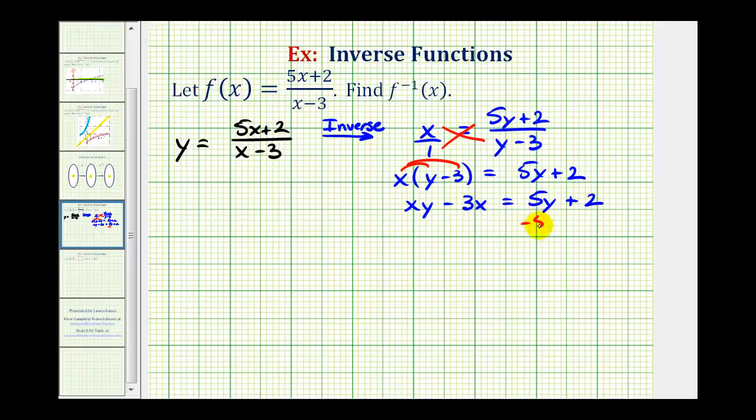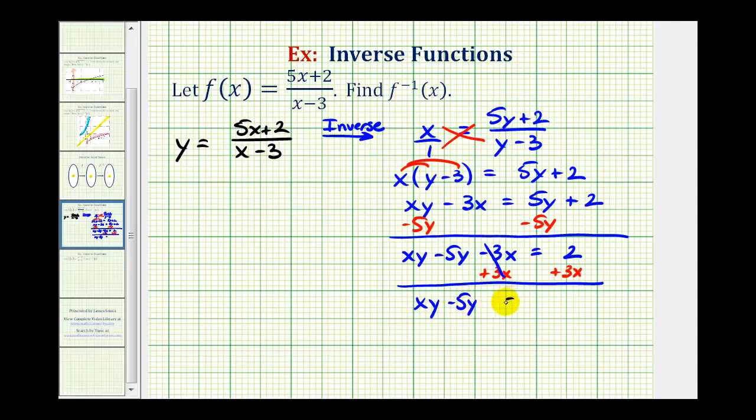Let's start by subtracting five y on both sides. So this would give us xy minus five y minus three x equals two. Now we'll add three x to both sides. This is zero, so now we have xy minus five y is going to be equal to three x plus two.